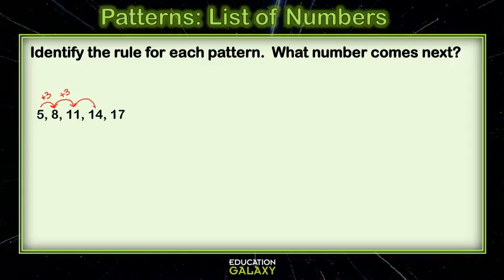I notice that each time they're adding 3 to get to the next number. So, that must be the rule. The rule is to add 3. Now, if I want to know what number comes next, I just add 3. So, 17 plus 3 gives me 20. So, 20 must come next.